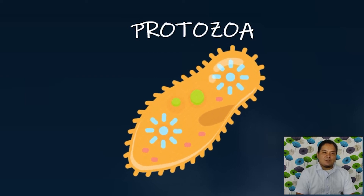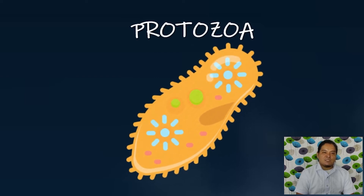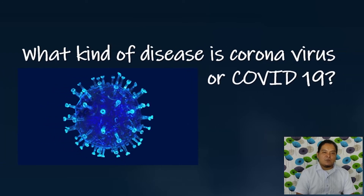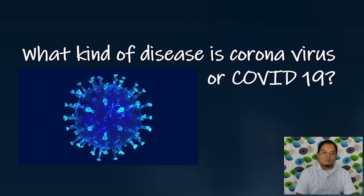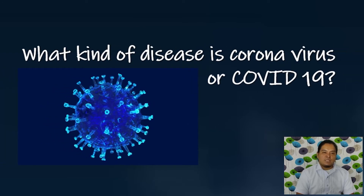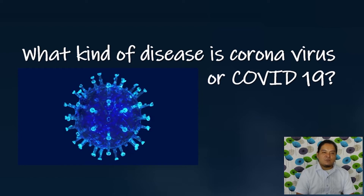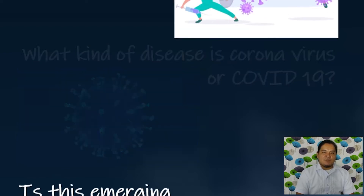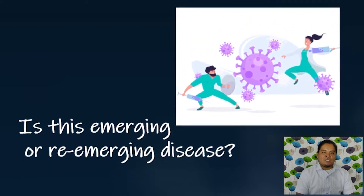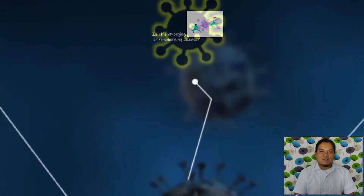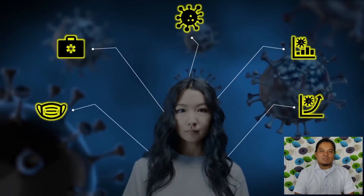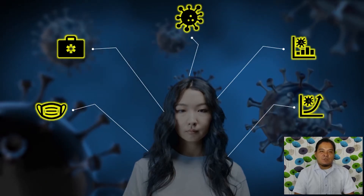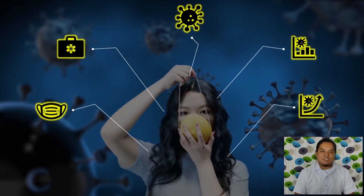An example of infectious disease that really affects the whole world is the coronavirus. But what kind of disease is coronavirus or COVID-19? Is this an emerging or re-emerging disease? To answer that question, let us define first the following: emerging diseases and re-emerging diseases.